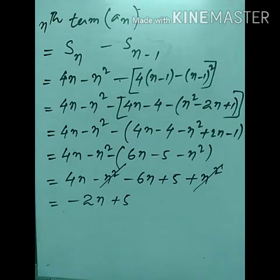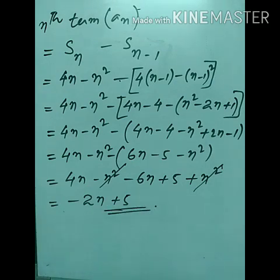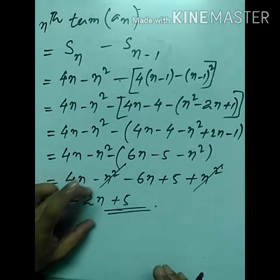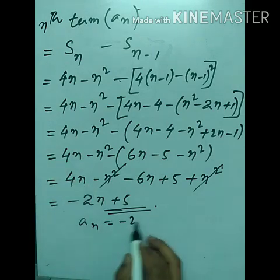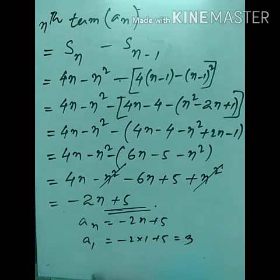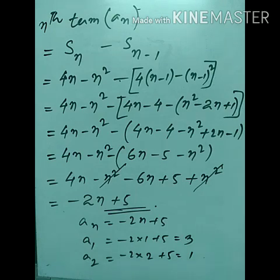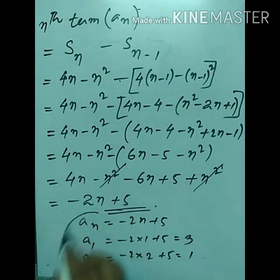So the nth term is aₙ = −2n + 5. To verify: if n = 1, a₁ = −2(1) + 5 = 3 ✓. If n = 2, a₂ = −2(2) + 5 = 1 ✓. This is how we find the general nth term. Now we'll move to the next question.